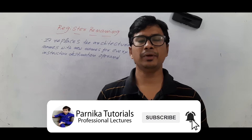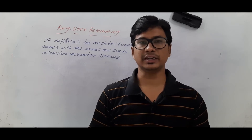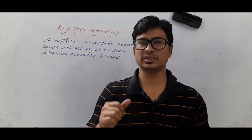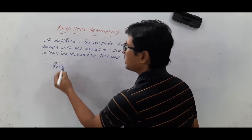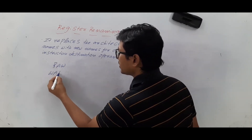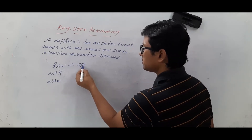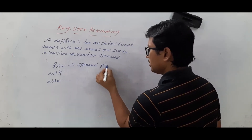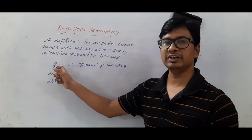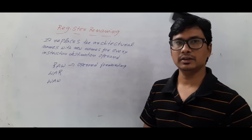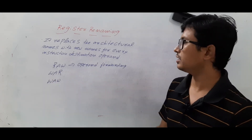Good morning friends, I hope everyone is doing well. I request everyone to watch my videos in sequence for better understanding. In the last few videos we discussed what a data hazard is and the types of data hazards: read after write, write after read, and write after write. In the last video we discussed a technique called operand forwarding, which eliminates the read after write data hazard. However, it does not eliminate the other two hazards: write after read and write after write.